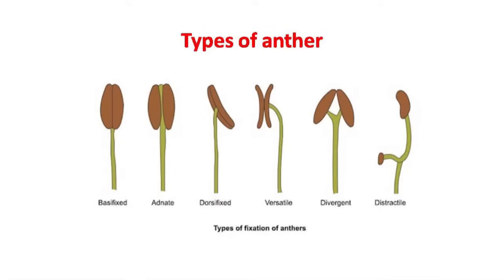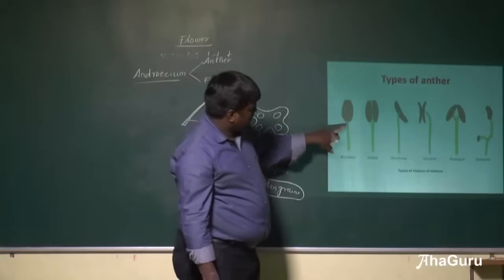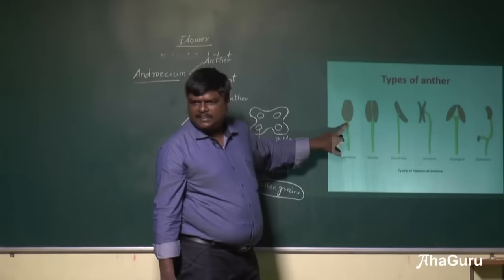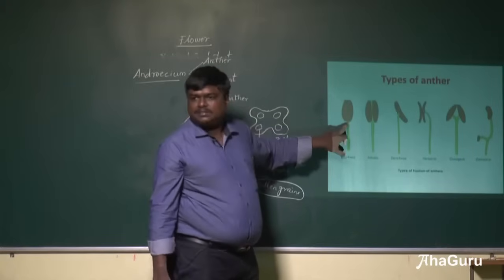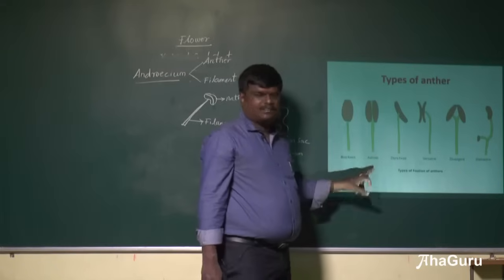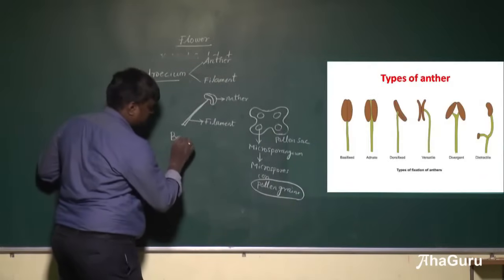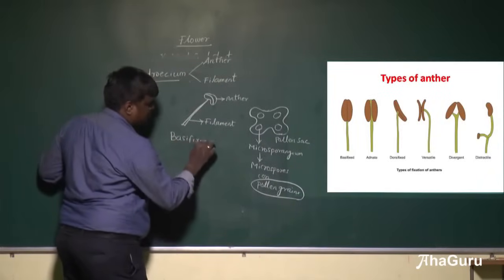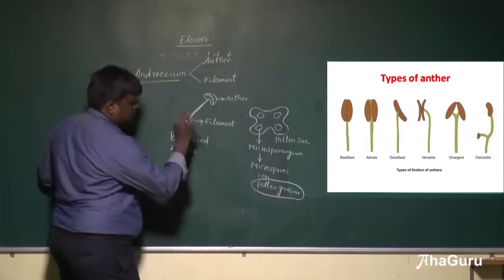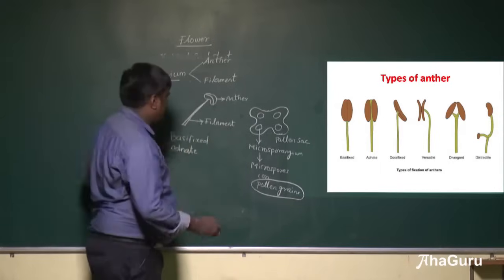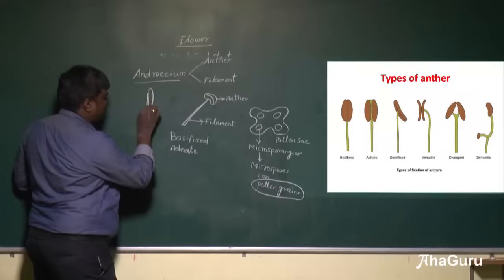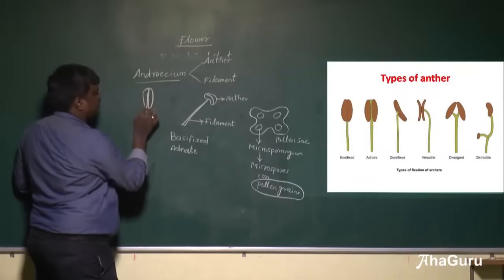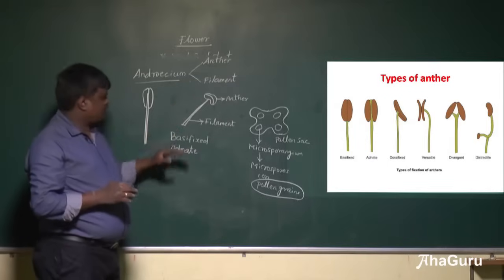Next we learn about the types of anther. There are basically six types. The first is basifixed, where the anther is fixed with the filament at the base. Next is adnate type, where the anther is fixed to the connective tissue — the center has the filament and both sides have the anther. Next is dorsifixed, where the filament is fixed to the dorsal side of the anther.